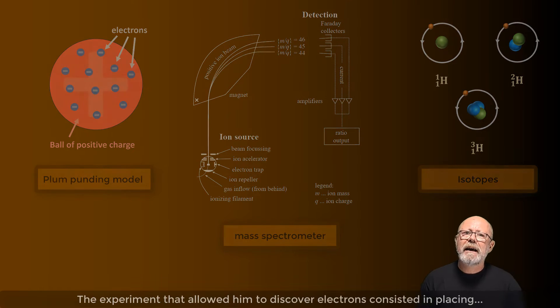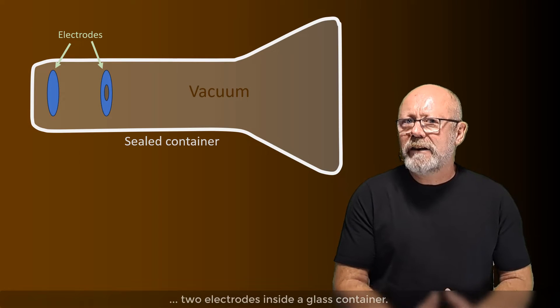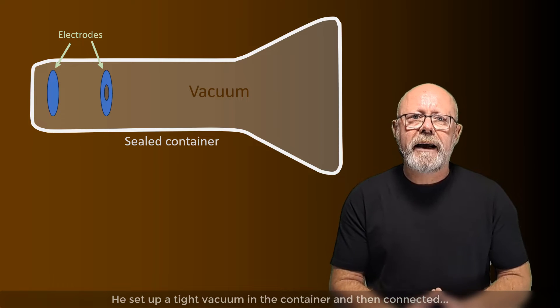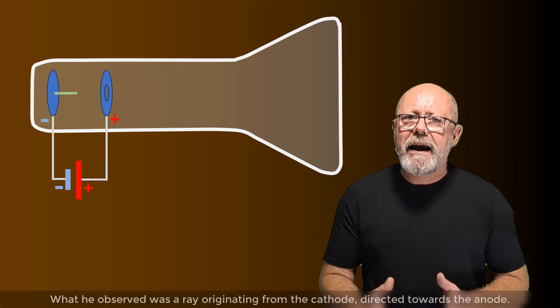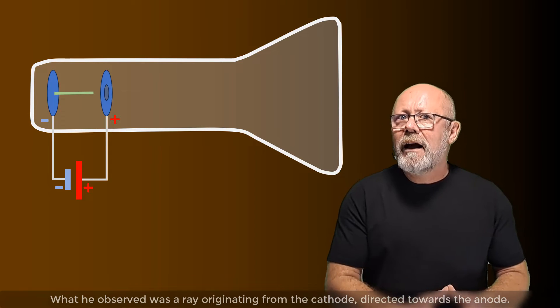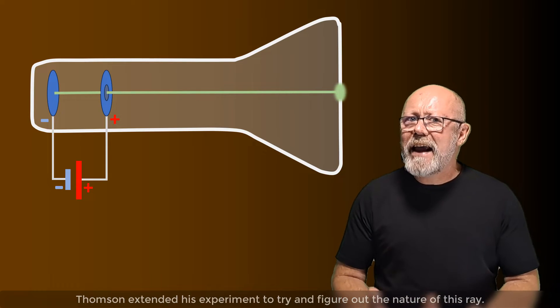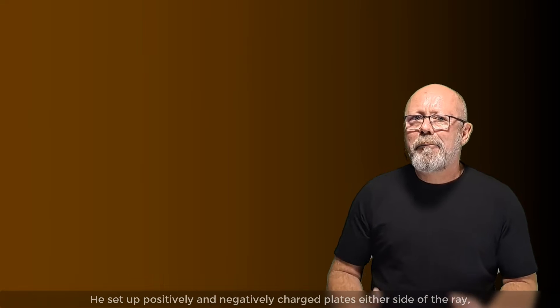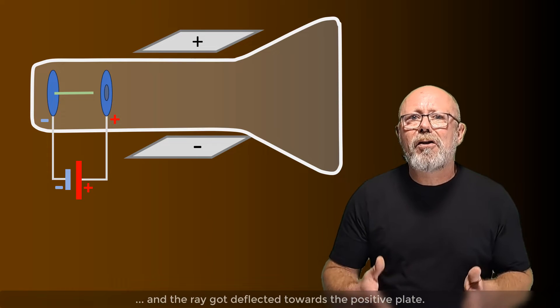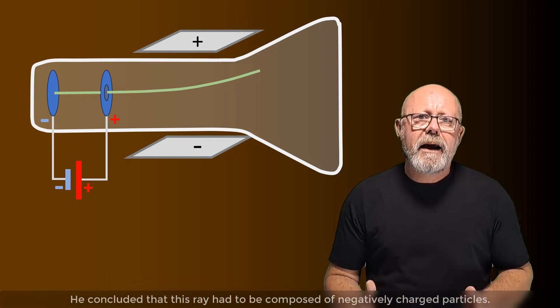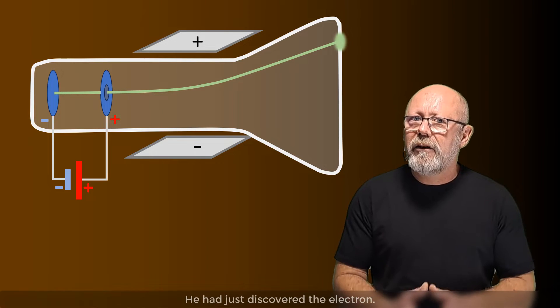The experiment that allowed him to discover electrons consisted in placing two electrodes inside a glass container. He set up a tight vacuum in the container and then connected a battery to the electrodes as shown in the diagram. What he observed was a ray originating from the cathode directed towards the anode. Thomson extended his experiment to try and figure out the nature of this ray. He set up positively and negatively charged plates either side of the ray, and the ray got deflected towards the positive plate. He concluded that this ray had to be composed of negatively charged particles. He had just discovered the electron.